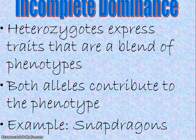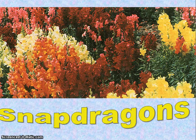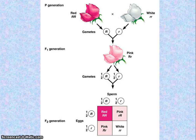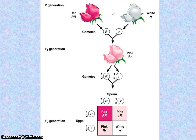What they saw was this effect in the plant snapdragons. So when they crossed a red and a white snapdragon, they got pink — the blending. So this is an example of incomplete dominance.